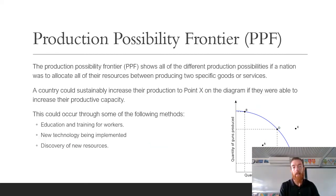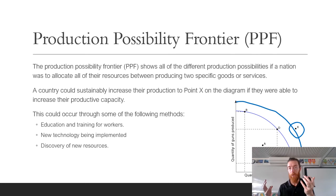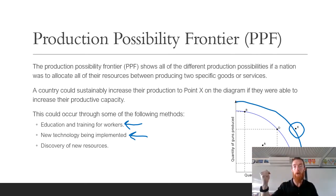For a point outside the curve like point X, which is unsustainable in the long term, a country could sustainably move its curve out to that point and create a new PPF if they were to increase their productive capacity. Productive capacity is the most we can produce at any point in time because we're limited by our resources. We can increase productive capacity through education and training for workers, implementing new technology, or discovering new resources — all of which allow more output to be produced.